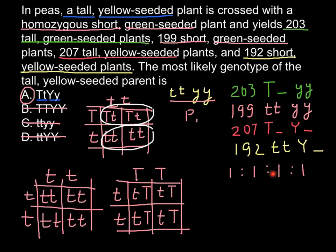Now you see that such a word problem, which seems at first glance to be complex and difficult, can be solved very easily. One final note: when comparing color and height traits, it is clearer to analyze them separately, labeling yellow versus green (or capital Y versus small y) and tall versus short (or capital T versus small t). Thank you for your attention. Please subscribe to my new videos, which I post almost every day. Goodbye.